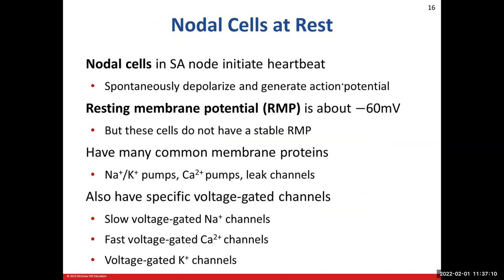Just like we did with neurons in chapter 12 when we described their physiology, we'll start by describing nodal cells at rest. These are the cells that initiate the heartbeat, and they do so by the phenomenon of spontaneous depolarization — they don't need to be told to depolarize, they just do. They just keep depolarizing. This is why it's important for these cells to have a constant supply of nutrients and ATP — that's why blood flow is so important to the heart.